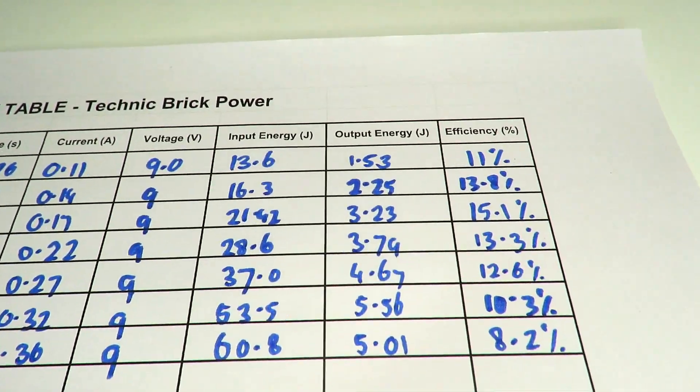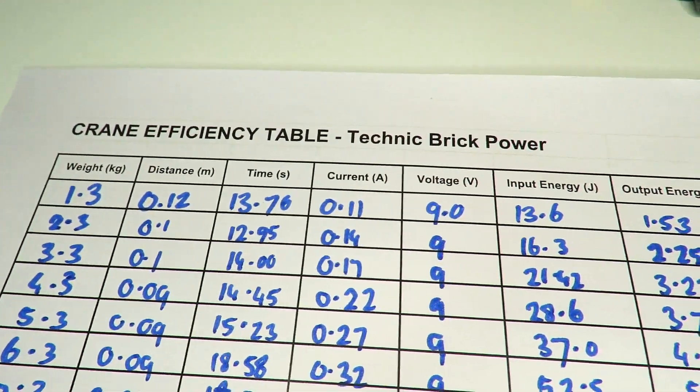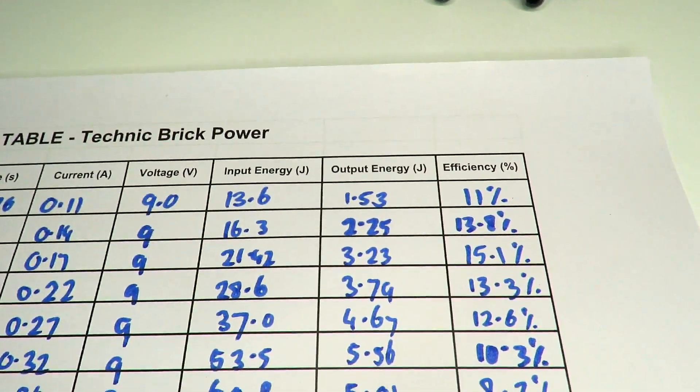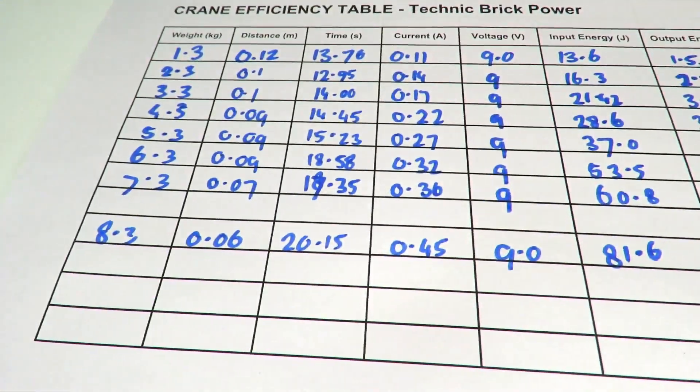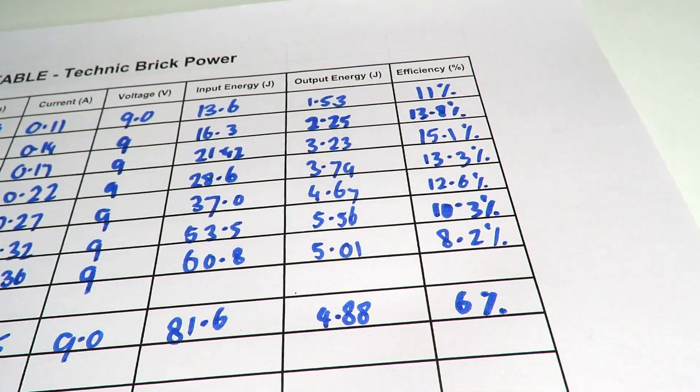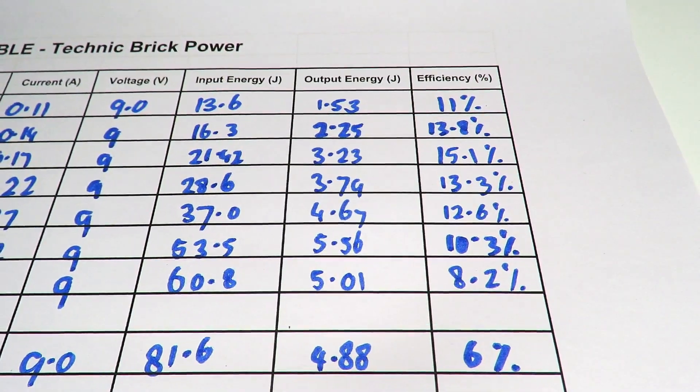And in fact, the same thing happens when you put no weight on. When you're lifting no weight, there's still a lot of energy being used, but there's no efficient output energy. So pretty much at zero weight and maximum weight, the efficiency is in fact zero. And therefore, you would expect a peak somewhere in between those two points.